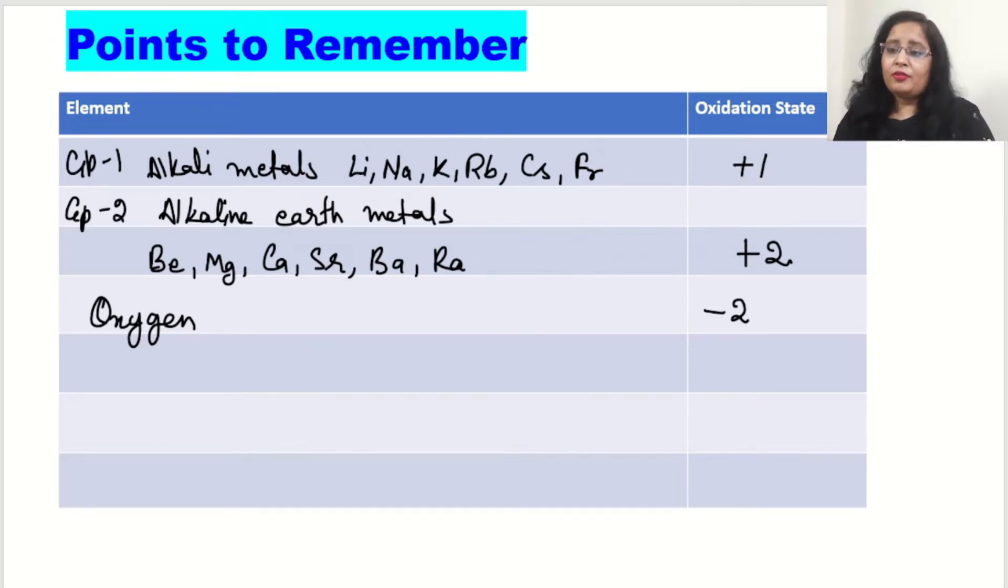Next comes in the list is hydrogen. Its oxidation number in normal cases is plus 1. But in case of metal hydride, I will mention here metal hydride, the oxidation state will be minus 1. But most of the cases we will use plus 1.